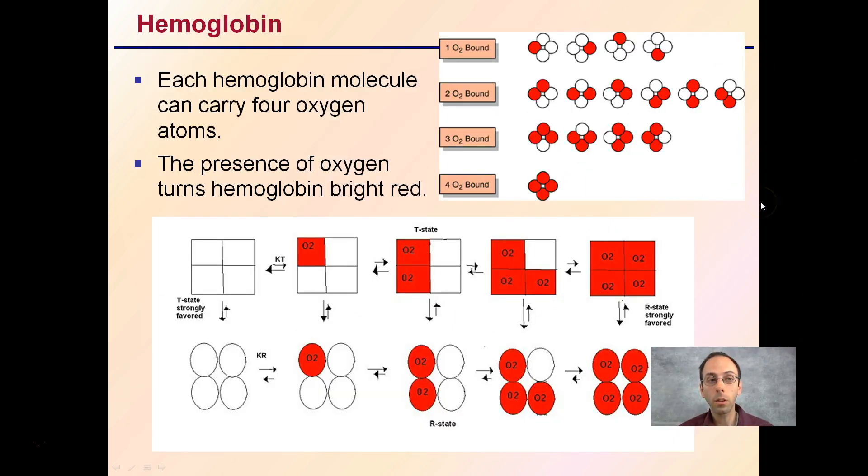So hemoglobin, each hemoglobin molecule can carry four oxygen atoms. The presence of oxygen turns hemoglobin a bright red. If it's not bound with oxygen, there'll still be a shade of red, but not quite that bright and vibrant red. We see the binding here of our oxygen molecules. We see one bound, the options for two being bound, for three being bound, and then for four.